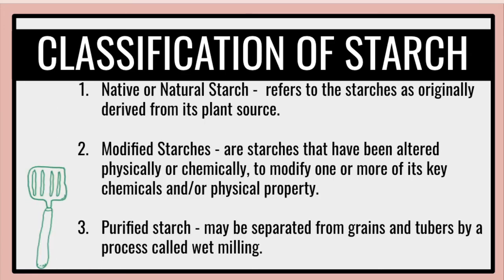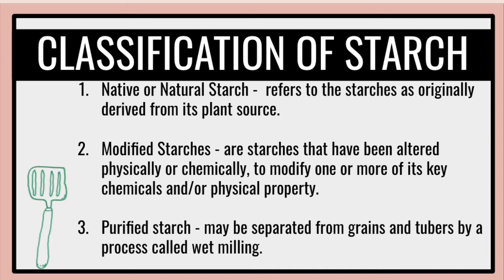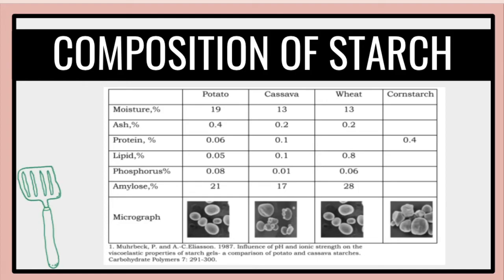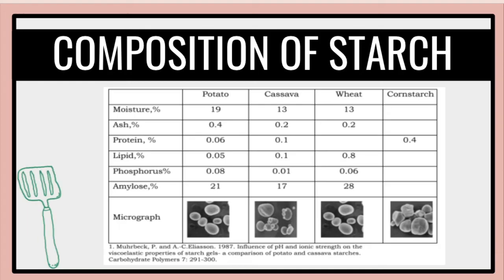Classification of starch. Number one, native or natural starch, which refers to starches as originally derived from their plant source. Modified starches are starches that have been altered physically or chemically to modify one or more of their key chemical and/or physical properties. Purified starch may be separated from grains and tubers by a process called wet milling, which employs various techniques of grinding, screening, and centrifuging to separate the starch from the fiber, oil, and protein. The composition of starch includes potato, cassava, wheat, and cornstarch, and their composition includes moisture, ash, protein, lipid, phosphorus, and amylose.